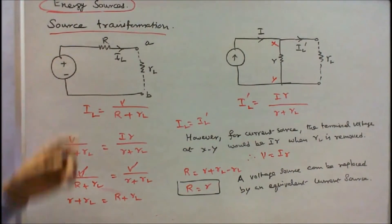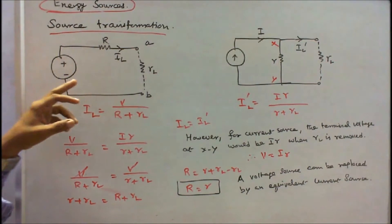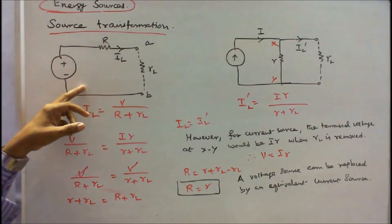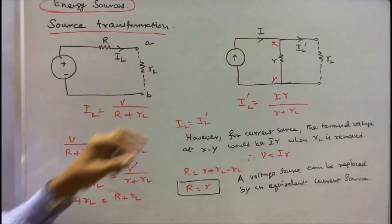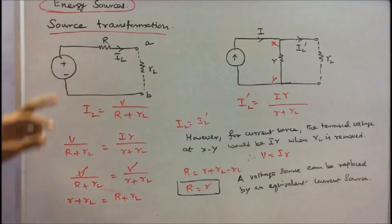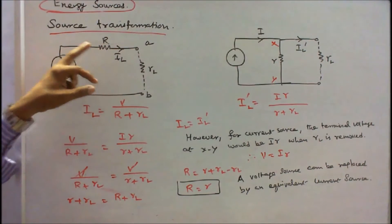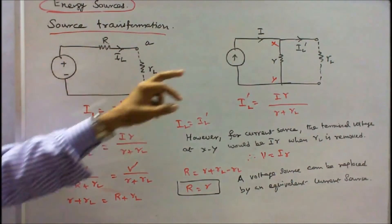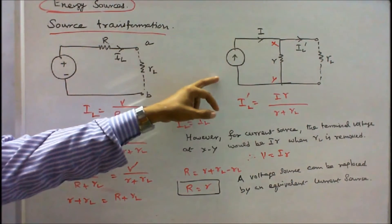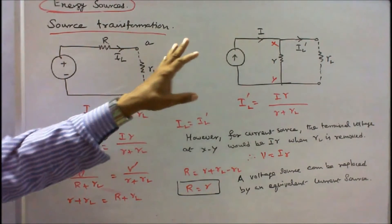Now we look at source transformation. This is a practical voltage source and this is a practical current source. In a practical voltage source, a resistor is connected in series with the voltage source. In a practical current source, a resistor is connected in parallel with the current source.